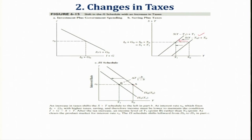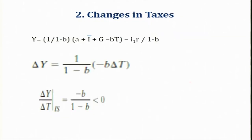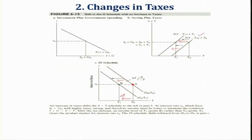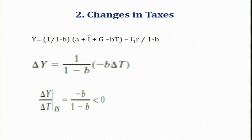As a result, the IS curve will be shifting leftwards. How much will be the decline in income? At the same initial level of rate of interest, the initial equilibrium position was A. Now when the government increases taxes, the saving plus tax diagram shifts leftwards and correspondingly del Y will be declining. The change in del Y is equal to 1/(1-B) times minus B times del T. This much is the decline in income — del Y is negative, declining by 1/(1-B) times minus B times delta T.